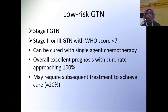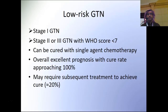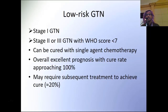Low-risk GTN includes Stage 1 GTN, or Stage 2 or 3 with a WHO prognostic score less than 7. Low-risk GTN can be cured with single-agent chemotherapy — this is the only disease that can be cured with a single agent. Overall, it has an excellent prognosis with a cure rate approaching 100%, though about 20% of patients may require subsequent treatment to achieve cure.